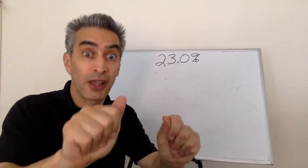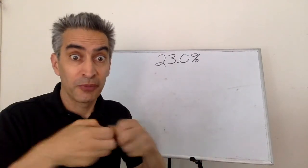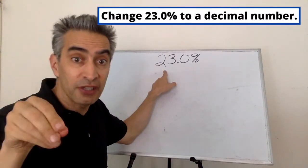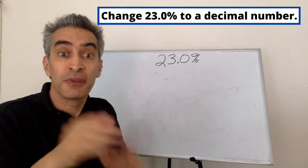Now you try to solve a problem. You ready? Change 23.0 percent into a decimal number.